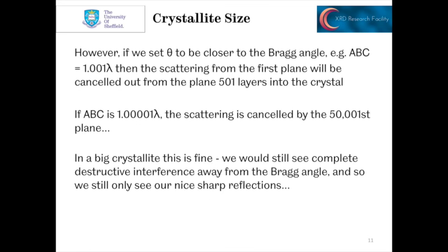However, if we set theta to be a lot closer to the Bragg angle, for example setting ABC to equal 1.001 wavelengths, the scattering from the first plane is going to be cancelled out from the scattering from the plane 501 layers down into the crystal. So we're still getting that complete destructive interference when we're away from the Bragg angle. If ABC is 1.00001 times the wavelength, the scattering would be cancelled out by the 50,000 and first plane and so on.